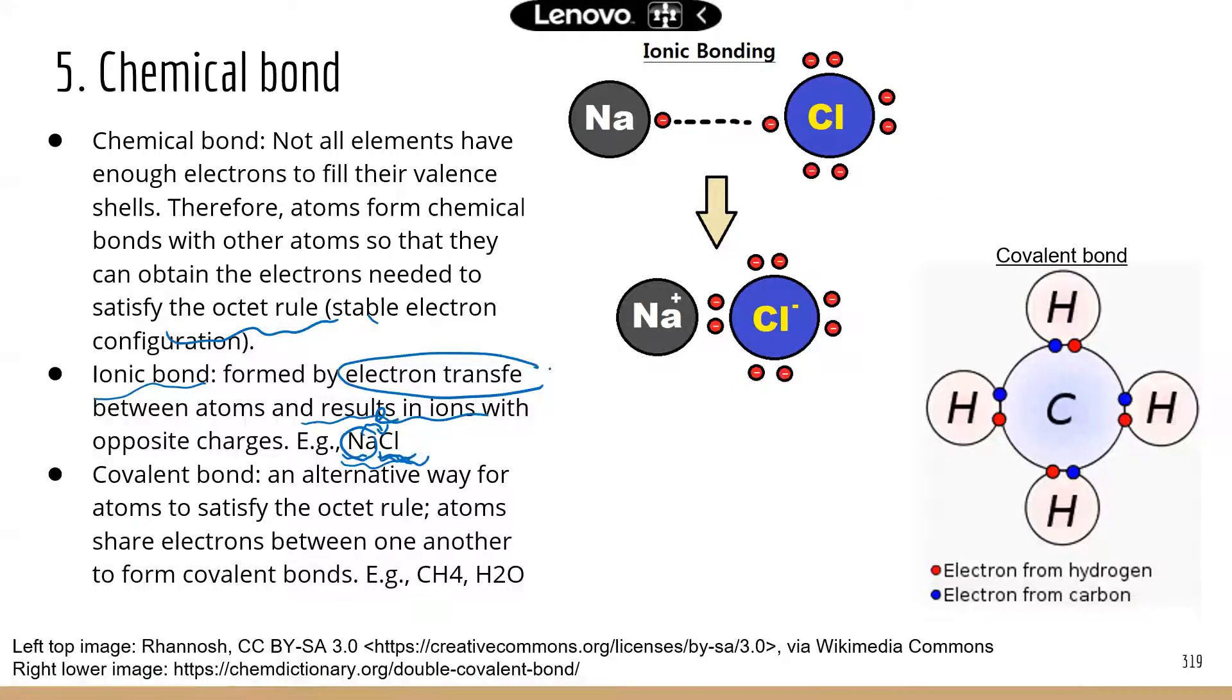Now, the chemical bond is not always formed by complete electron transfer. Sometimes the atoms share the electrons. So nobody completely takes the electrons from somebody else. Now they're sharing the electrons.